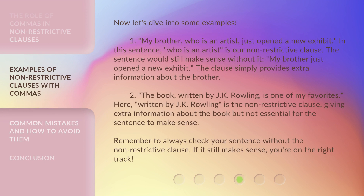Now let's dive into some examples. 1. My brother, who is an artist, just opened a new exhibit. In this sentence, 'who is an artist' is our non-restrictive clause. The sentence would still make sense without it: 'My brother just opened a new exhibit.' The clause simply provides extra information about the brother.